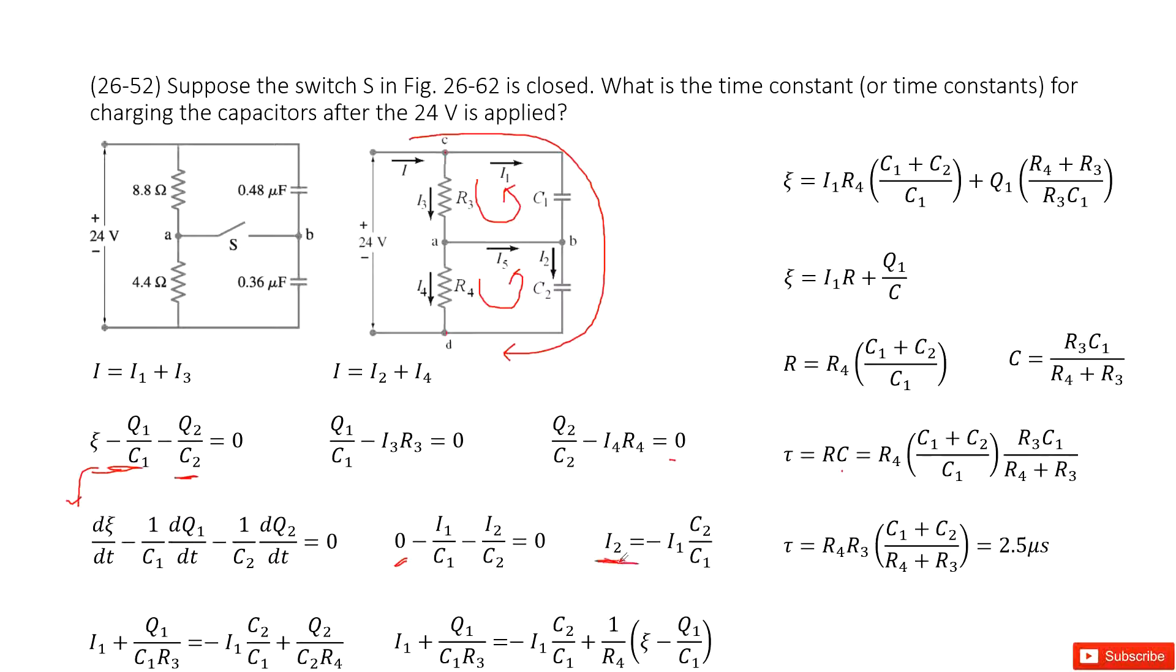Get I2 equals negative I1 times C2 over C1. Now you can see we look at this function. It can be I1 plus I3 equals I2 plus I4.